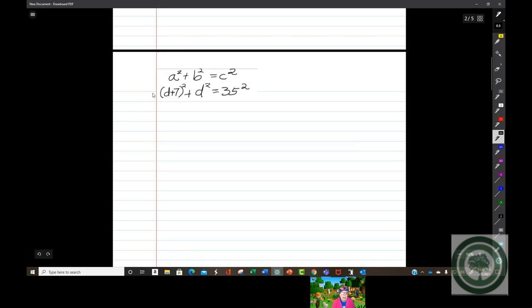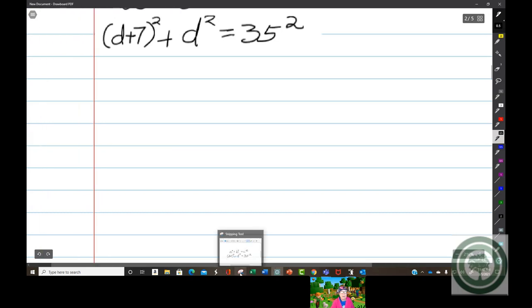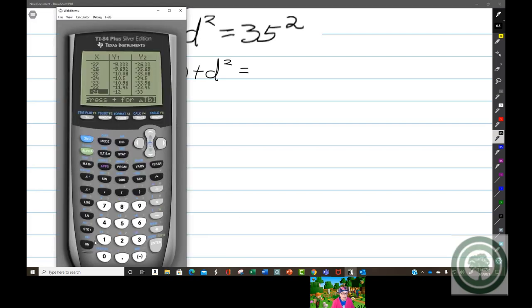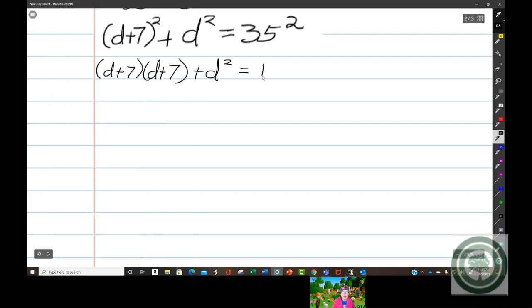Please do not be fooled. D plus 7 squared does not equal d squared plus 49. It does equal d plus 7 times d plus 7. 35 squared is 1225.